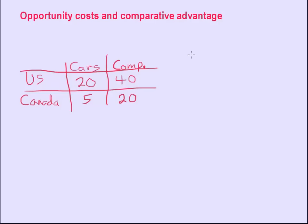Well now let's calculate the opportunity cost. Because remember the comparative advantage is producing at the lowest opportunity cost. So opportunity cost of one car, and let's look at the opportunity cost of one computer.